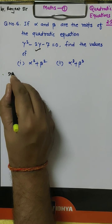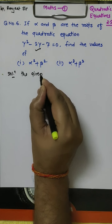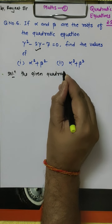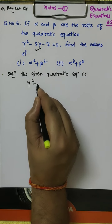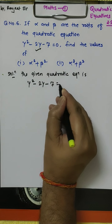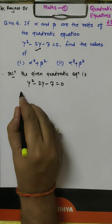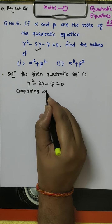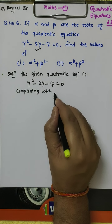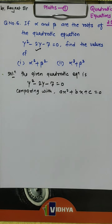Now we will write the solution. The given quadratic equation is y squared minus 2y minus 7 is equal to 0. We will compare this with the standard form, that is ax squared plus bx plus c is equal to 0.